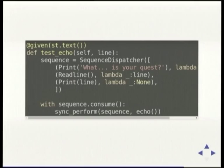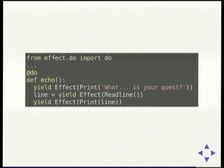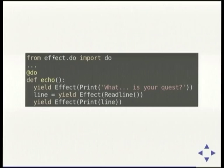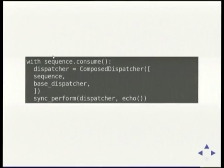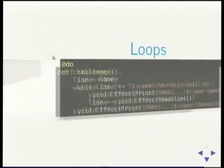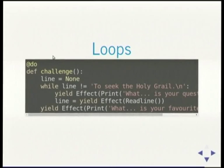Here's the generator API — I think this is Pythonic code. I yield the effect of printing 'What is your quest?', I get a line back from the yield, and that is the effect of ReadLine. Then I yield that line back out to the user. It's a little bit more boilerplate than three direct functions but it doesn't have the huge mess of boilerplate from before, and it's exactly equivalent. I can run the same test and it will pass.